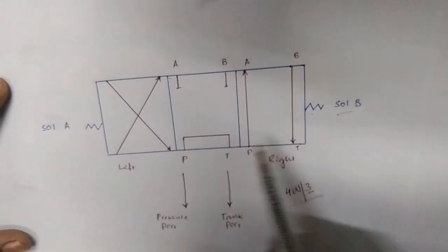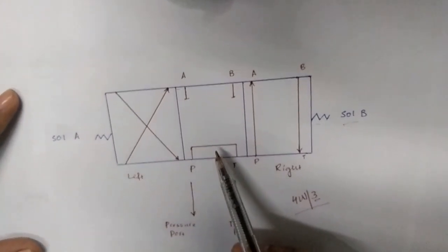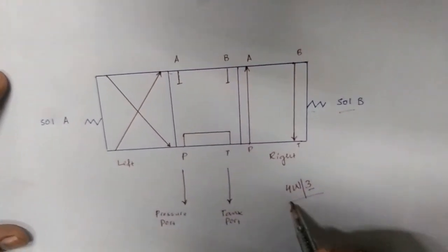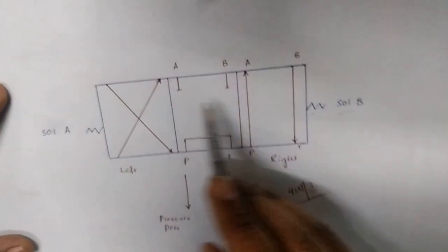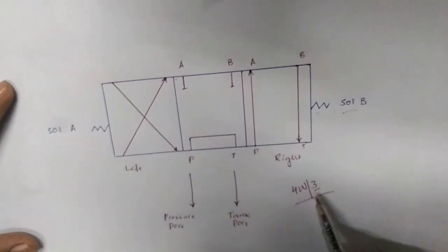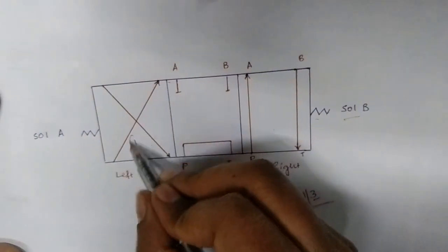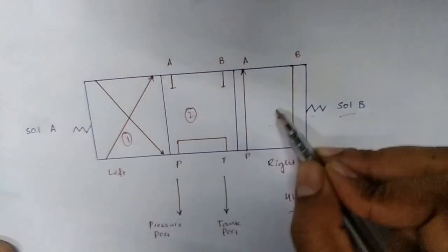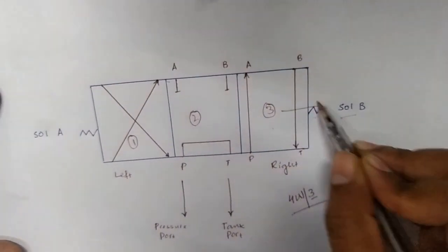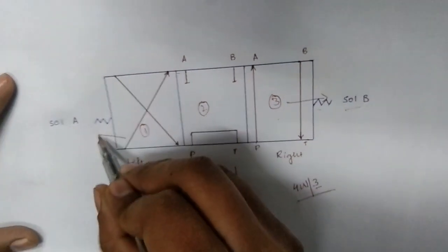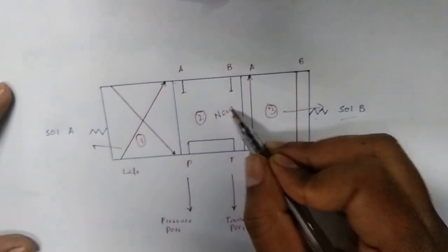This is the neutral position when no solenoid valve is active. It's a four-way, three-position valve — position one, position two, and position three. The center is the neutral position.